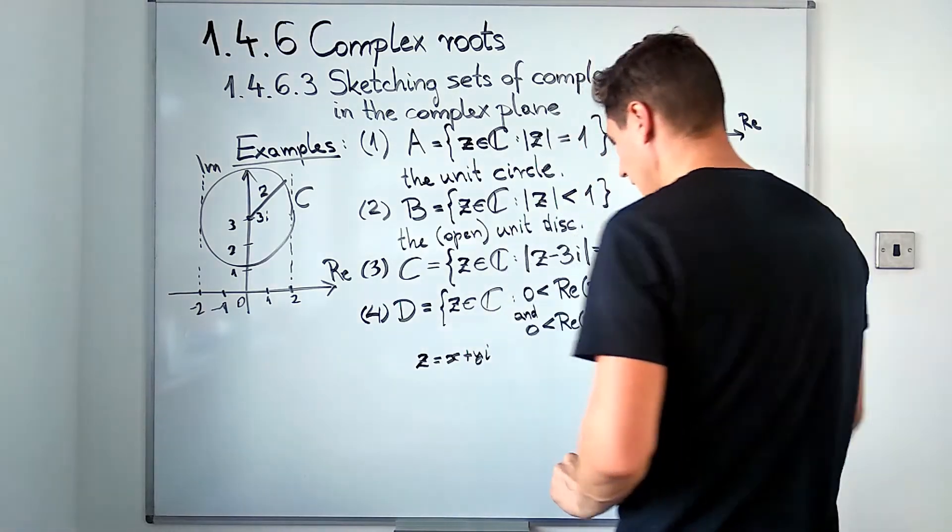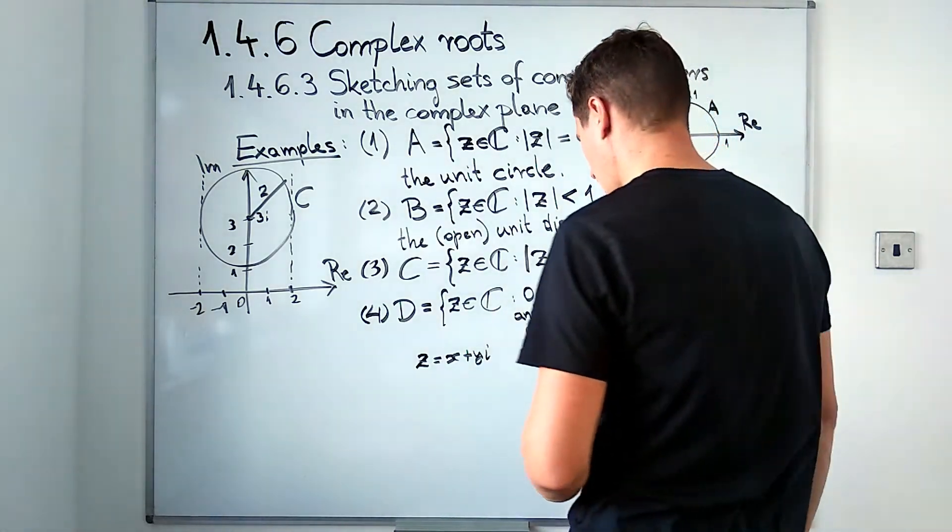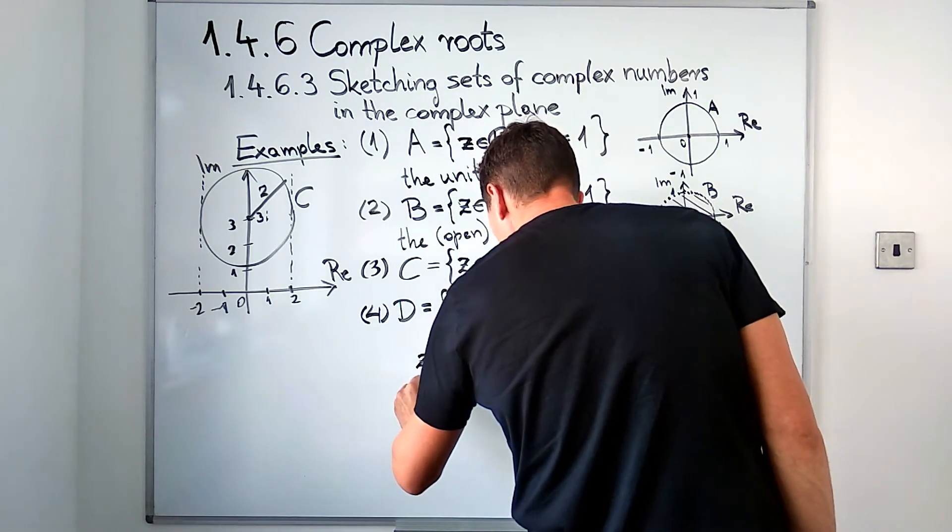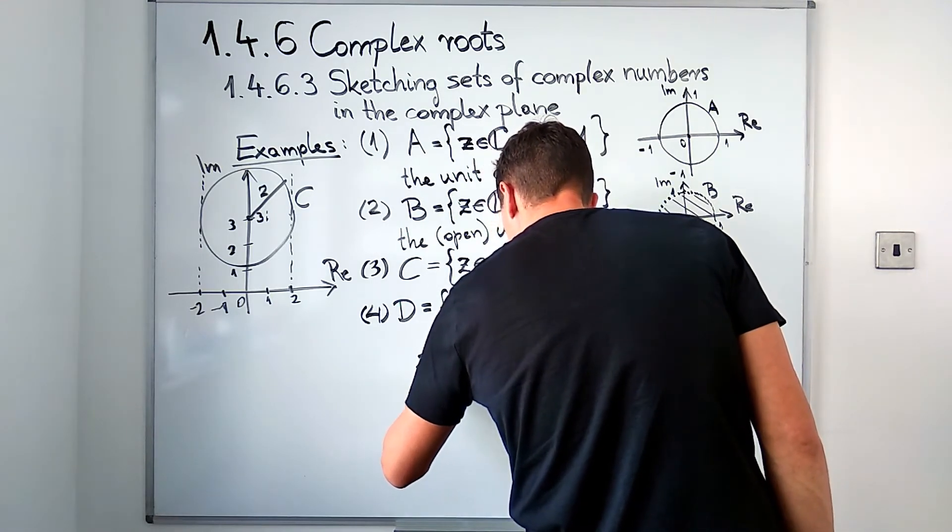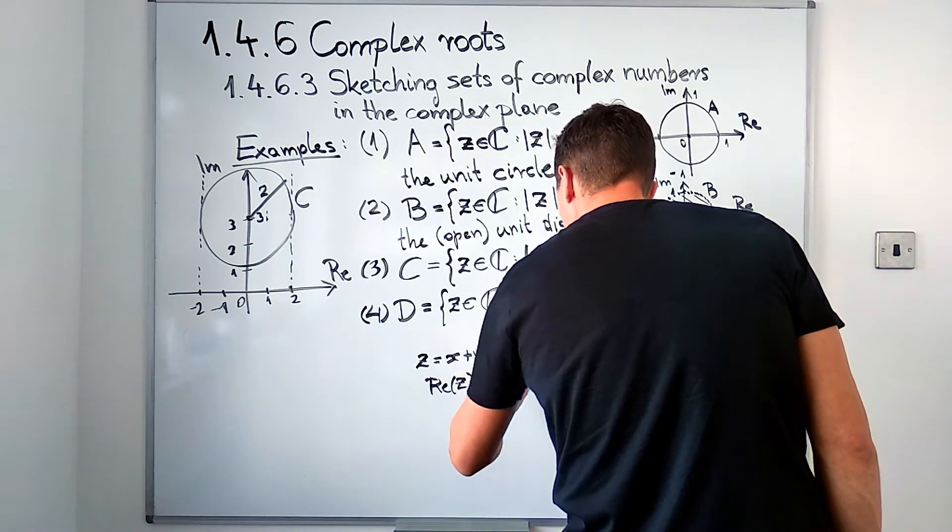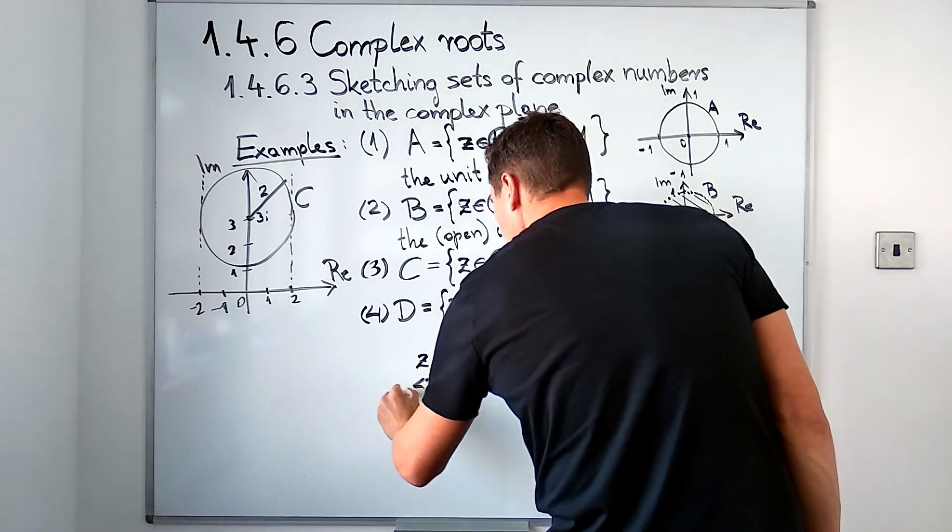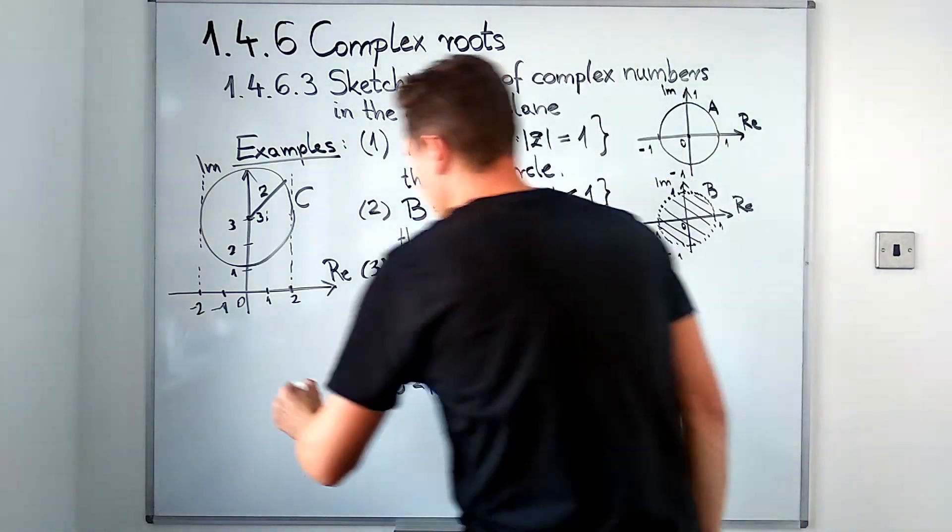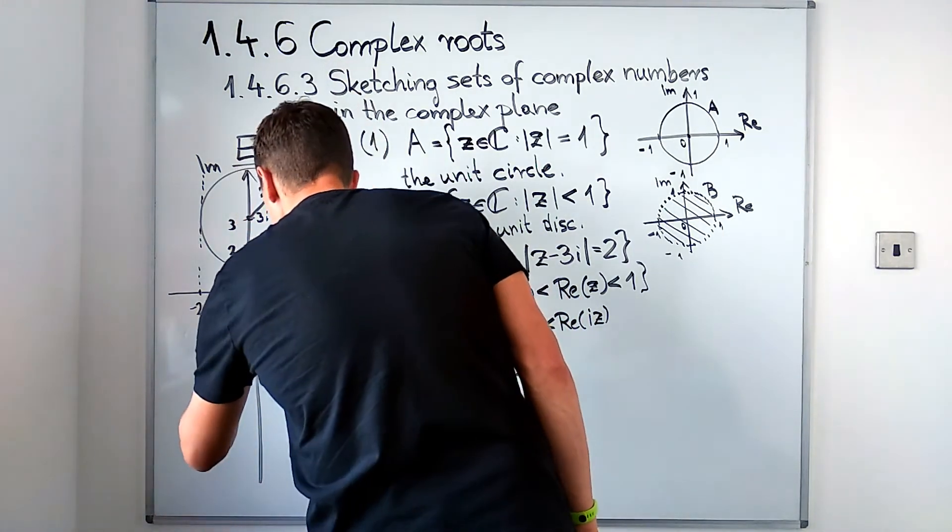If z is given in this algebraic form of x plus yi, then the real part of z, that is of course x, so x should be between zero and one.